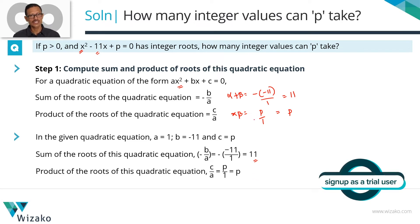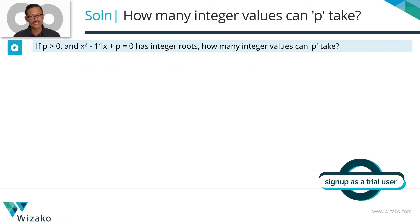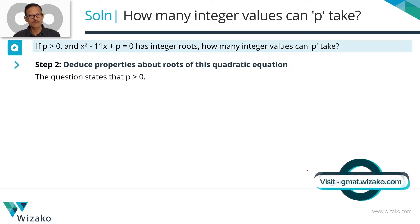Let's find out what kind of numbers can alpha and beta be. Let's do the deduction in three steps. The first one: the question says p is greater than zero.